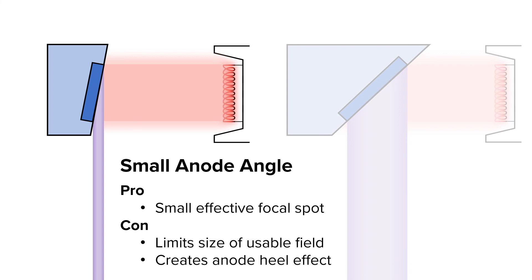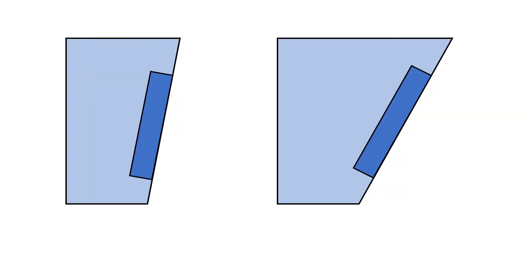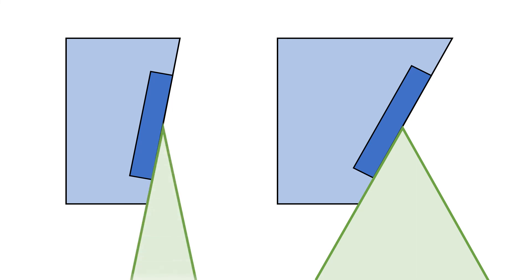The anode heel effect will be covered in depth in another lecture, but we can quickly touch on the size of the usable x-ray field. The area of the useful beam is determined by the angle of the anode. Notice how the anode on the right, which has close to a 45 degree angle, has the widest useful beam, while the anode on the left has a narrower useful beam. The central ray is designated by a dashed green line. In order to completely cover a 14 by 17 cassette at a 40 inch SID, you would need a minimum anode angle of 12 degrees.